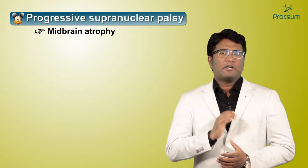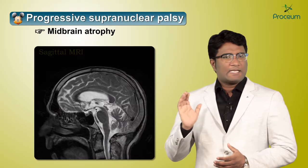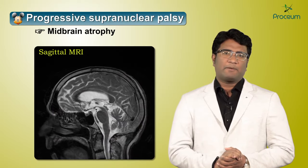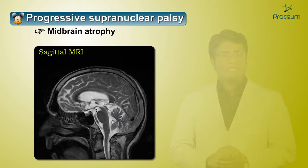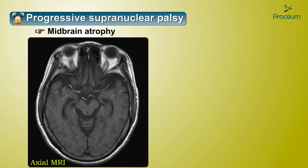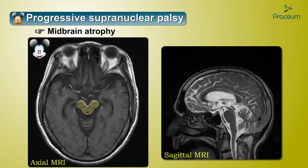The same atrophic midbrain on a sagittal MRI in a case of progressive supranuclear palsy gives the shape of a hummingbird or a penguin sign. So, progressive supranuclear palsy on an axial MRI gives a Mickey Mouse appearance, and on a sagittal MRI gives a hummingbird or a penguin sign.